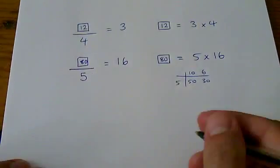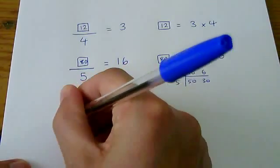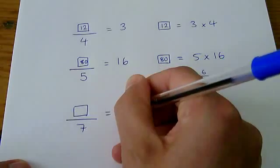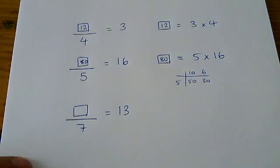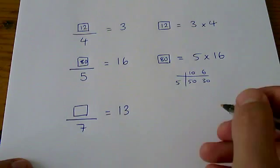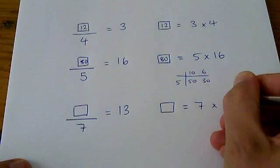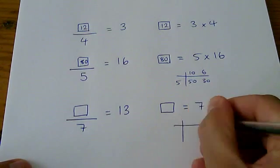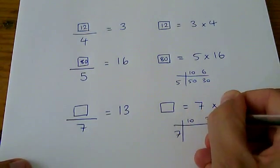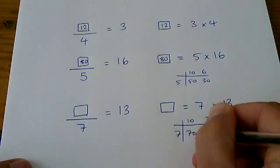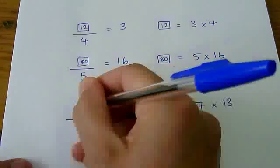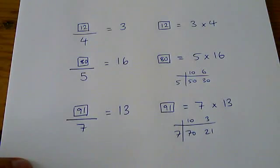Let's have a look at another one. Box divided by 7 equals 13. What number goes in the box? Well, again, I'm going to rewrite this as a multiplication: 7 times 13. I'm going to do 7 times 13 in a little grid method. So that's 91. The answer in the box is 91.